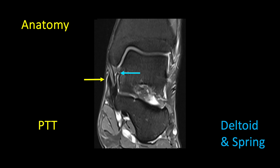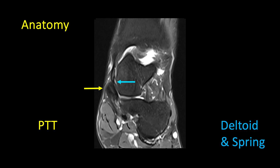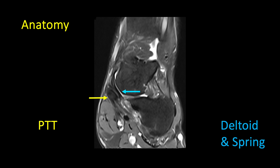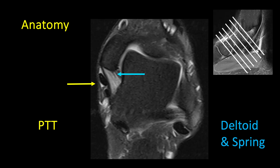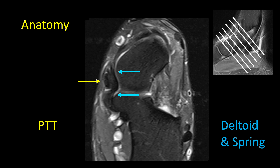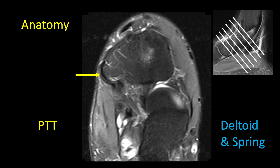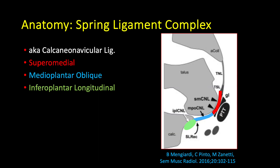Notice that the posterior tibial tendon remains superficial to the deltoid and spring ligament. We're now transitioning from the deep to the superficial deltoid, moving into the anterior components of the superficial deltoid, and here is a transition zone between the superficial deltoid ligament complex and the spring ligament, which is located deep to the posterior tibialis. Now rewinding in the oblique axial plane, starting at the ankle, we see the deep deltoid ligament deep to the posterior tibial tendon. Moving progressively anteriorly and inferiorly, approaching the navicular insertion of the posterior tibialis, we see the additional plantar slips of the spring ligament, and finally the posterior tibial insertion onto the medial pole navicular.